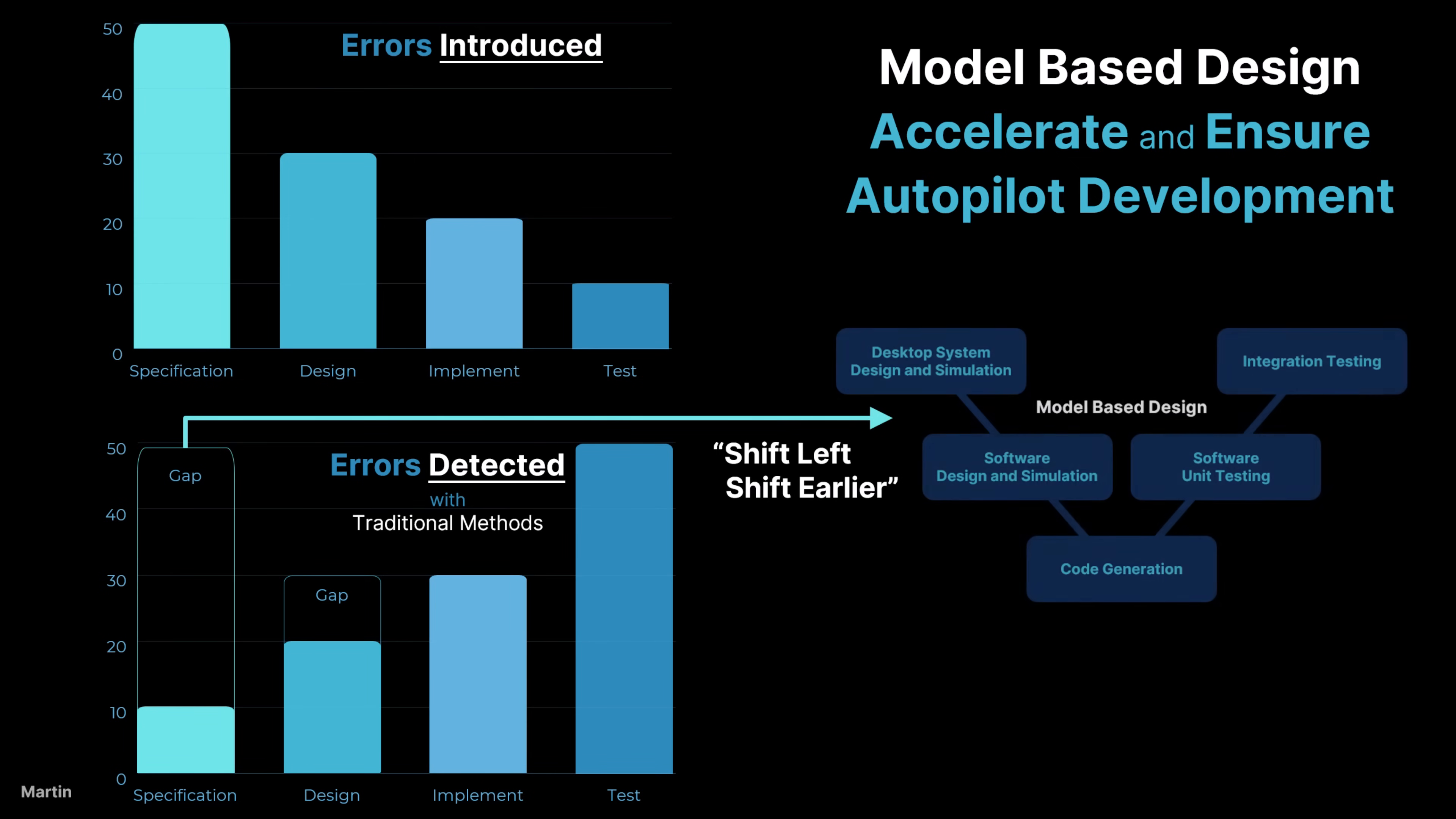Model-based design helps mitigate this problem by shifting left, shifting earlier, enabling early validation of specifications and designs through simulation, formal verification, and rapid prototyping. By detecting errors in the early phases, model-based design reduces late-stage failures and improves overall development efficiency.